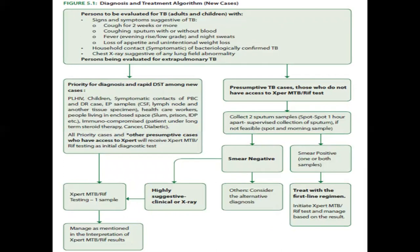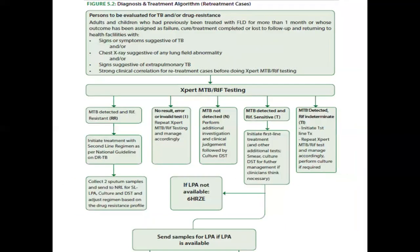If a patient presents with cough for more than two to three weeks with sputum production without blood, and has fever with other constitutional symptoms like loss of appetite and weight loss, you should always consider the patient a presumptive tuberculosis case and look for sputum examination. If GeneXpert is available, it should always be used for diagnosis. A chest radiograph should also be ordered. The treatment of pulmonary tuberculosis will be dealt with in the next lecture. Thank you.